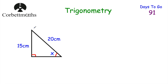So let's have a look at this first question. Here we've got a right angle triangle — you can see the height of the triangle is 15 centimetres and the length of this diagonal is 20 centimetres. We've been asked to find the size of angle X. The first thing we'd want to do is label the sides. The side opposite the right angle is called the hypotenuse. The side opposite angle X is called the opposite. And the remaining side, beside the angle we're trying to find, is called the adjacent.